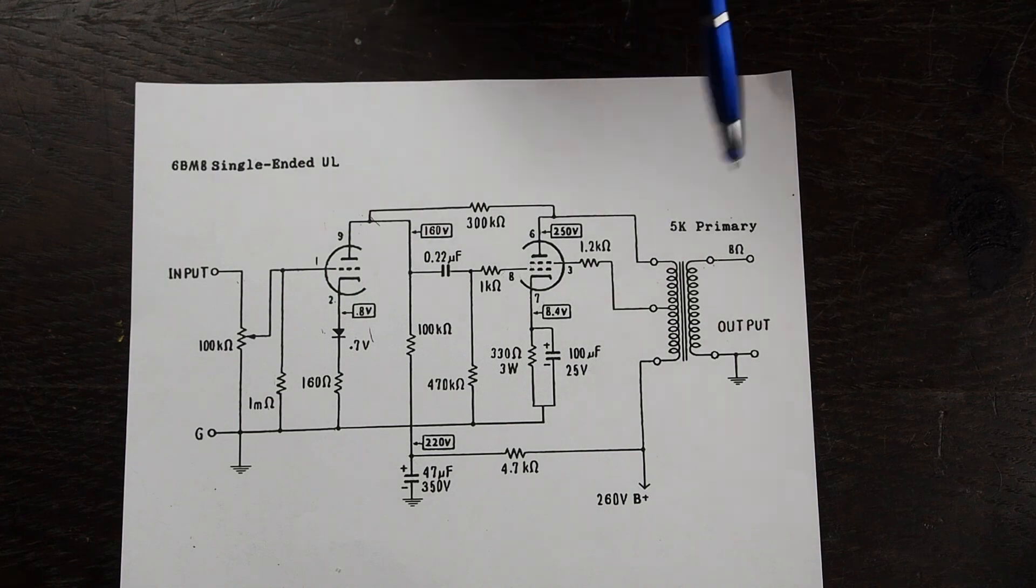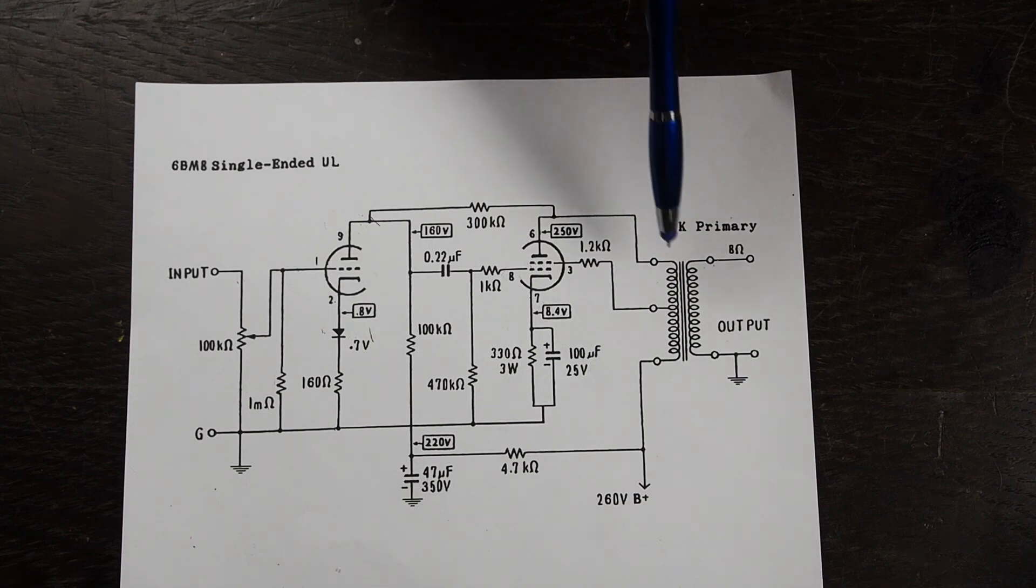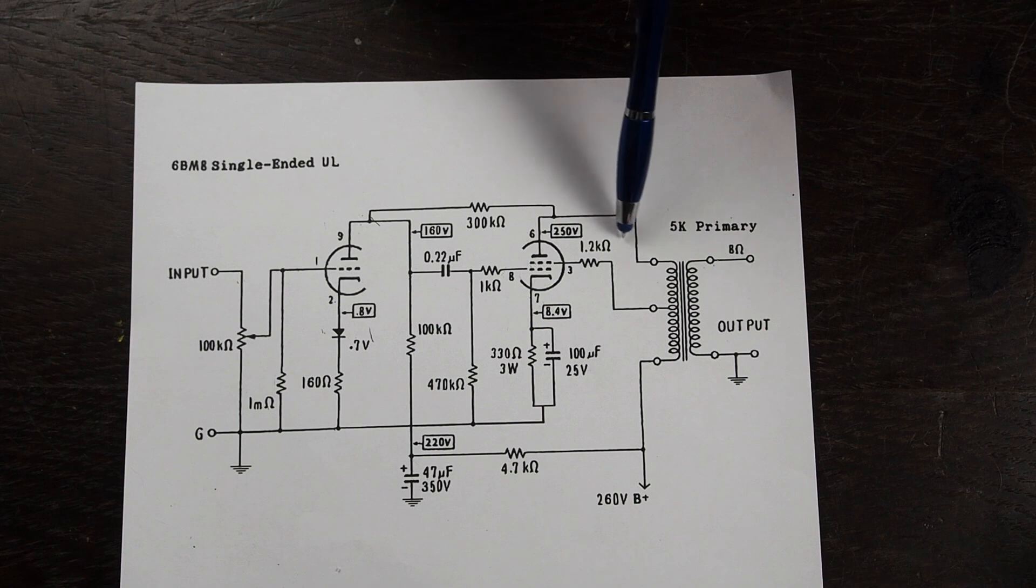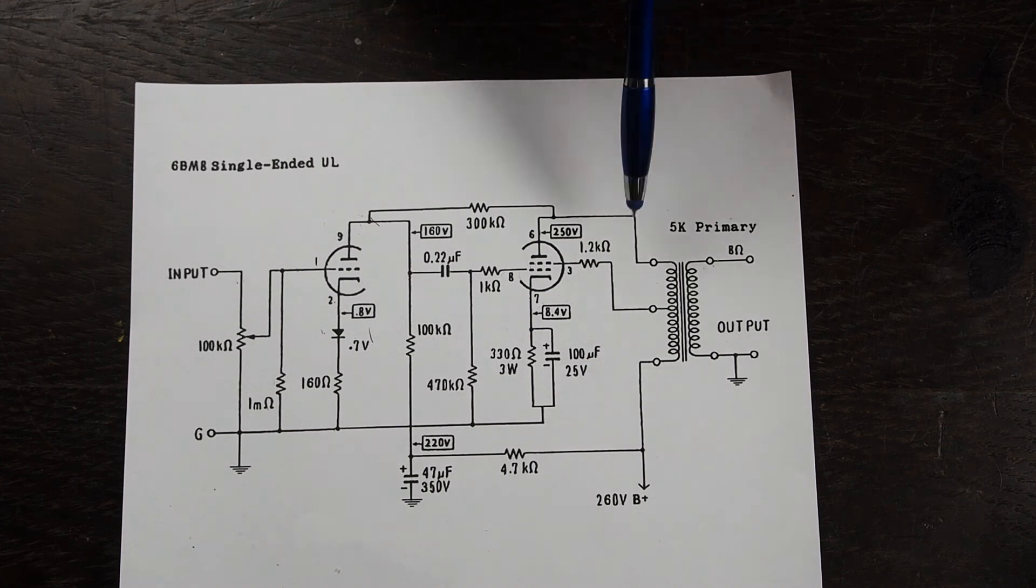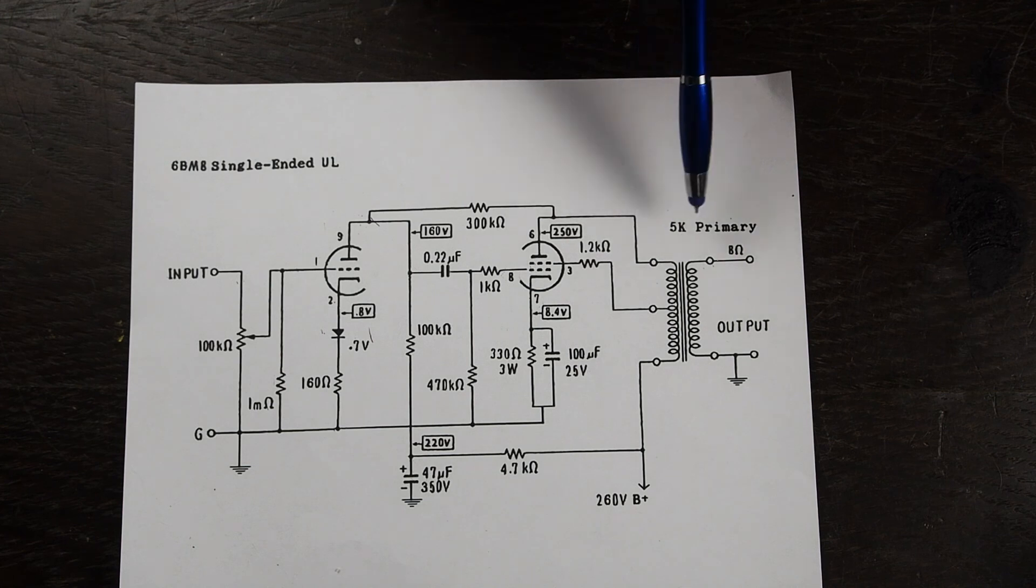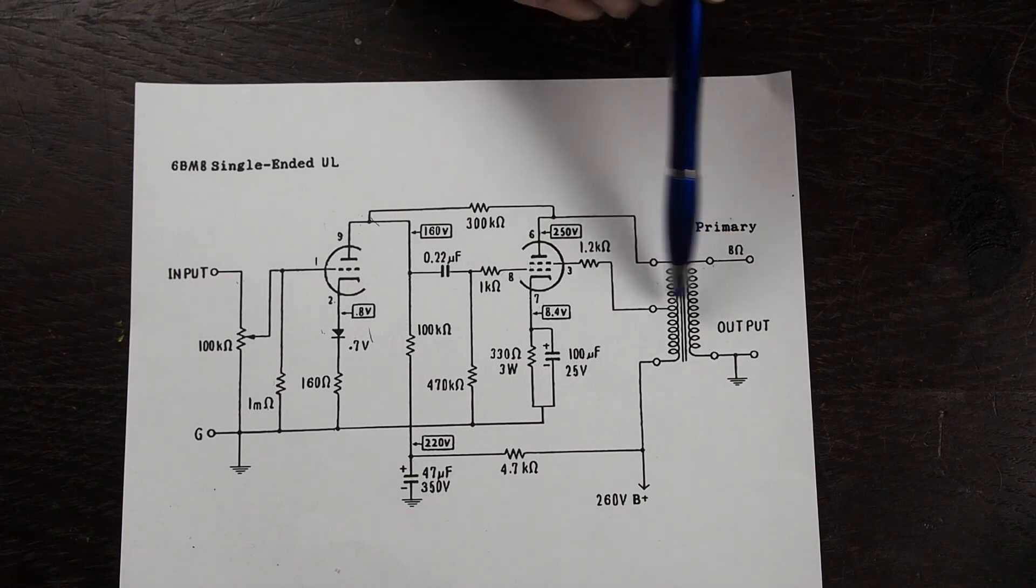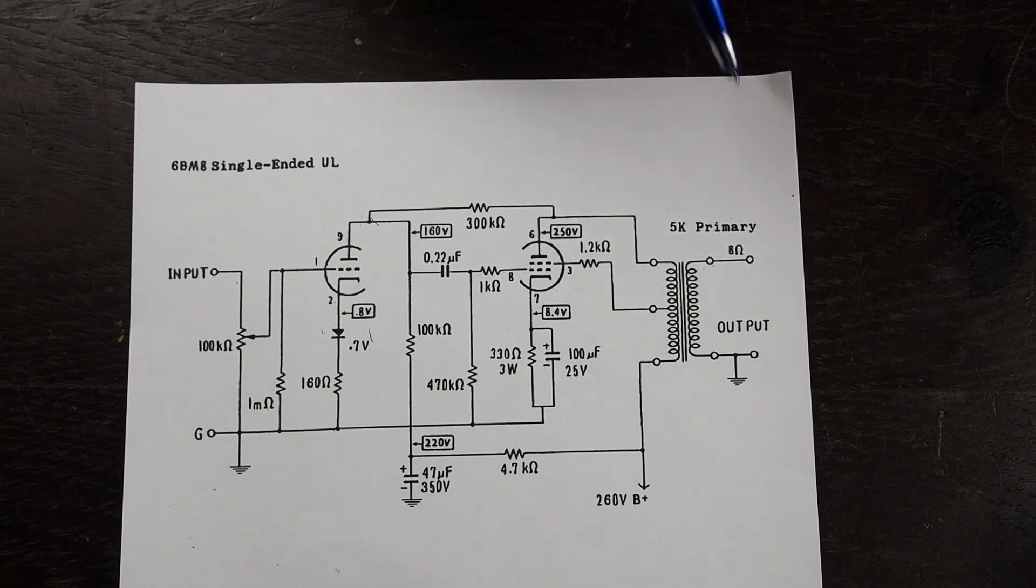Now one thing you can do to save some money is use an output transformer that doesn't have this ultralinear tap. You can probably save $50 or more getting the simpler type output transformers that don't have this tap and connect it here as a triode strap. I will include a schematic in the web upload I do for both kinds in case you decide to save some money and use the cheaper type, but I highly recommend spending the money on some better transformers that have this extra tap on them.